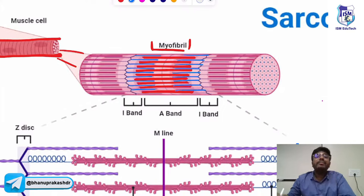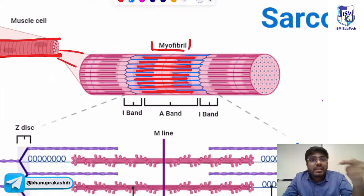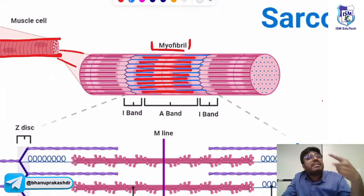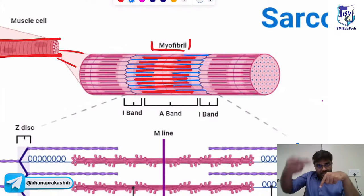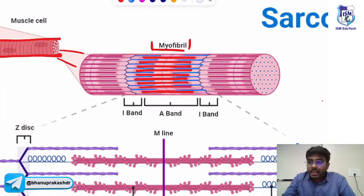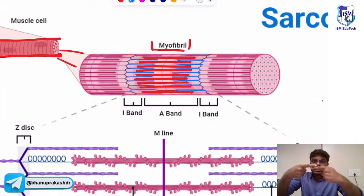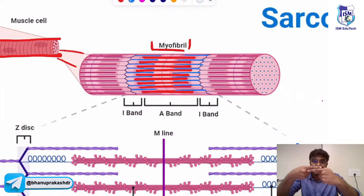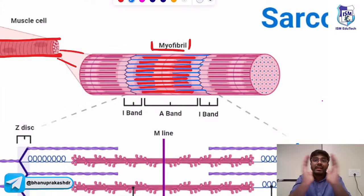Inside a muscle: there are fascicles; inside the fascicles, there are muscle fibers; inside the muscle fibers, there are myofibrils — which are the actin and myosin. During muscle contraction, the actin is going to slide on the myosin, causing muscle contraction. Actin slides onto the myosin molecule, so muscle contraction occurs.